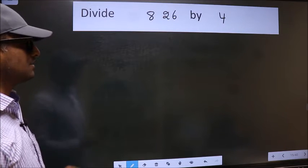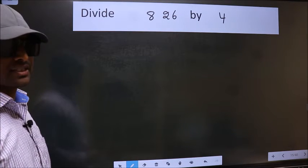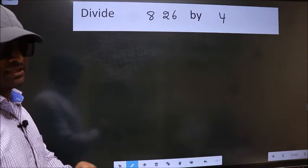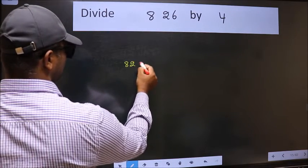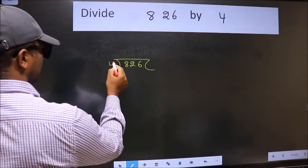Divide 826 by 4. To do this division, we should frame it in this way. 826 here and 4 here.